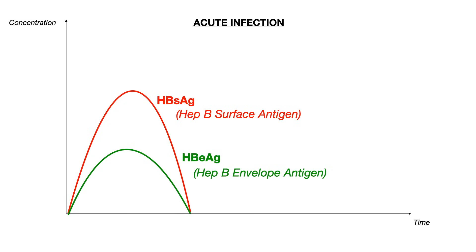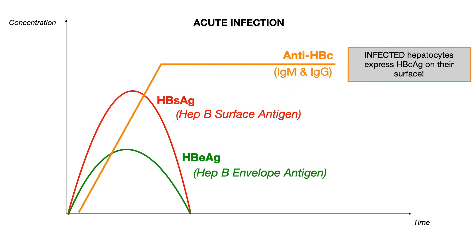After the body looks at the acute infection, it sees the surface antigen on the virus, it sees the envelope antigen being pooped out of the virus, and it makes anti-HBC. Recall that serology cannot detect the core antigen because it's protected in the core of the virus. But what happens is that once a hepatocyte becomes infected, it can actually express that core antigen on its surface. Once an infected hepatocyte expresses the core antigen on its surface, the body can detect that and in response make anti-HBC. Like all antibodies, anti-HBC can take the form of IgM — meaning it's an acute or recent infection — or IgG, meaning it's a chronic or long-term infection.